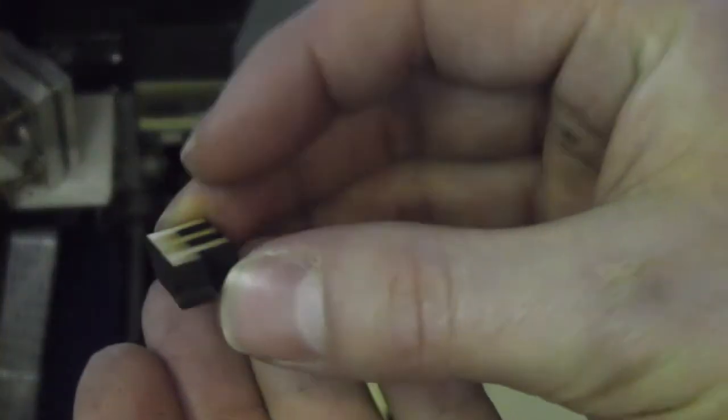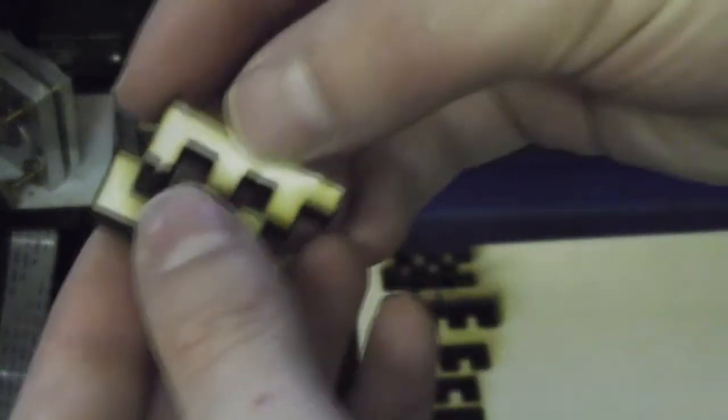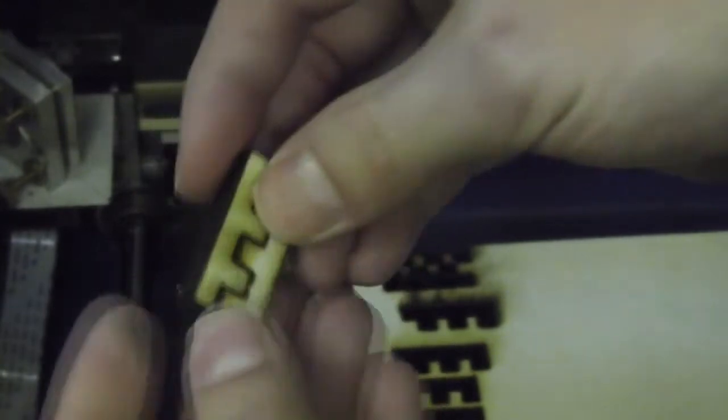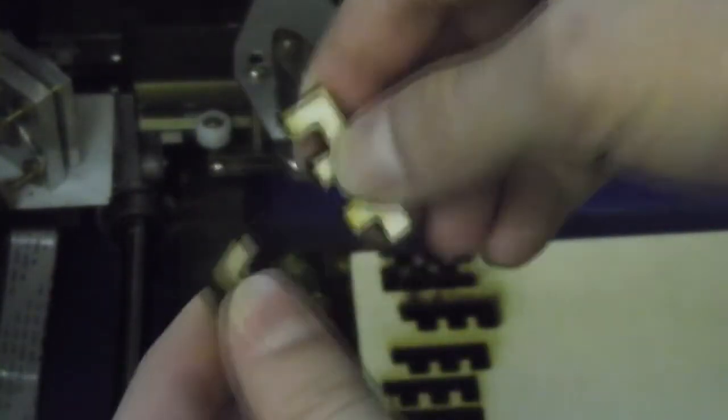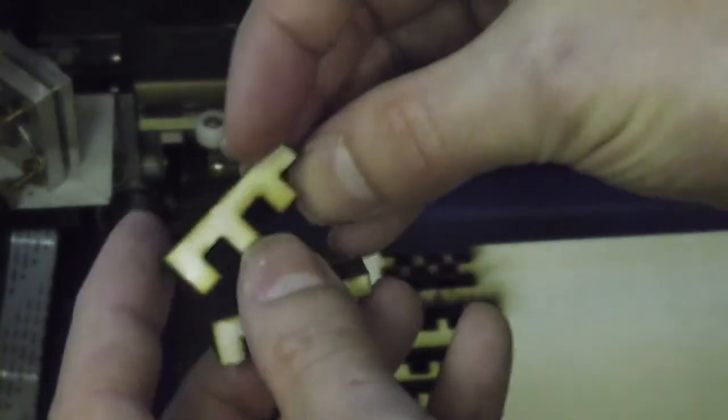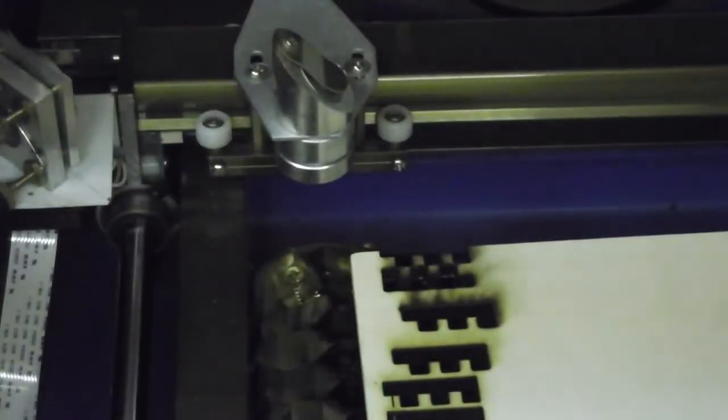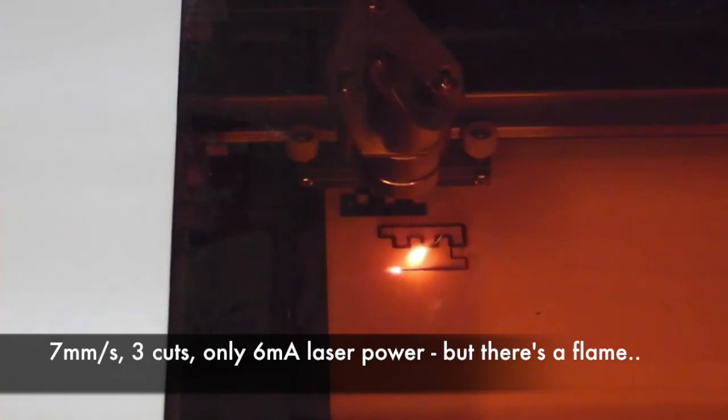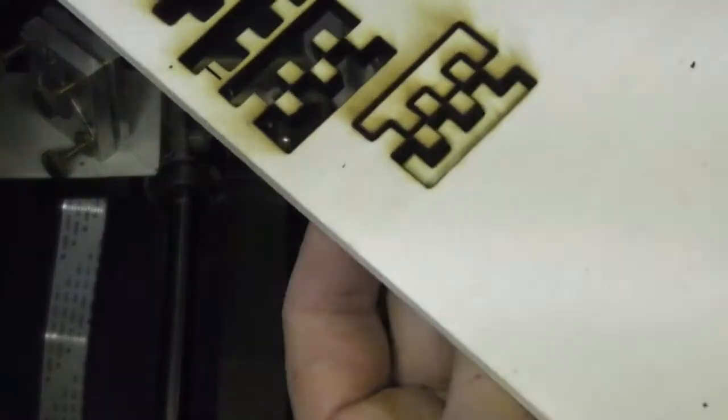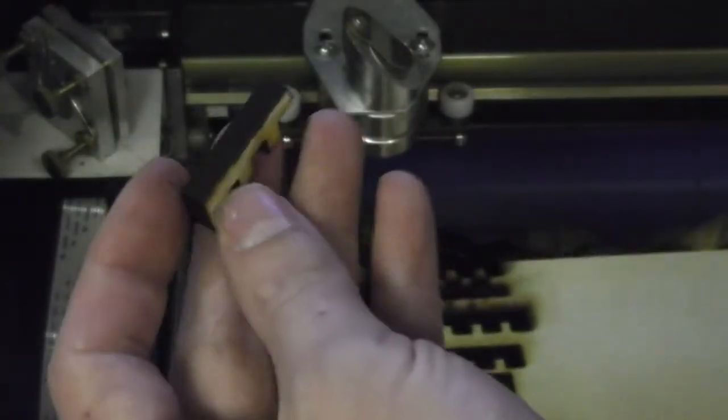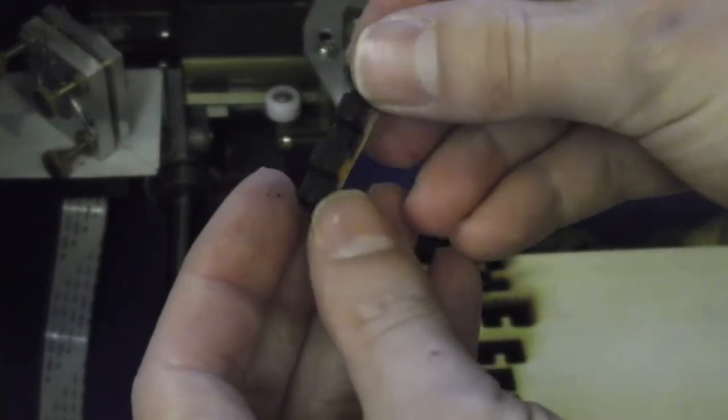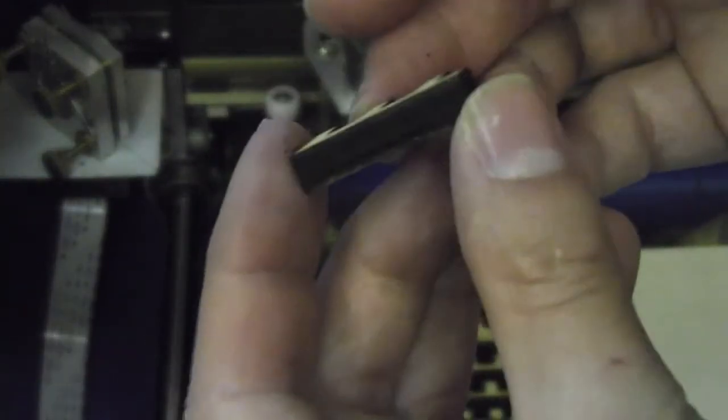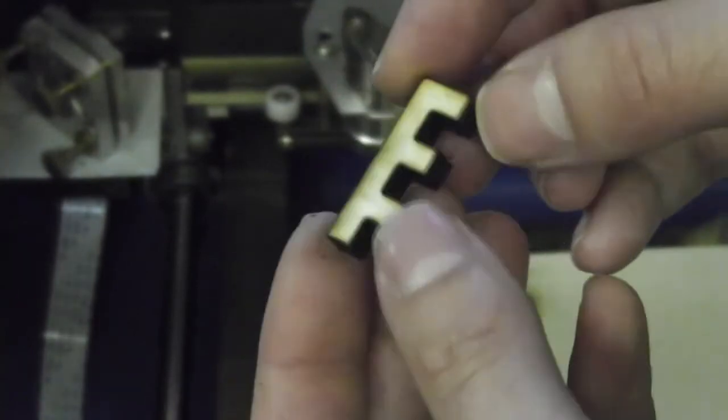So, very charred edges. But, perfectly sized cuts and slight smoke damage. Reduced the laser power to 6mA. So this final piece was 7mm per second at only 6mA laser power, and 3 goes, got through easily, but again with a lot of charring on the edges.